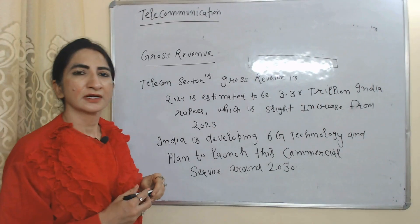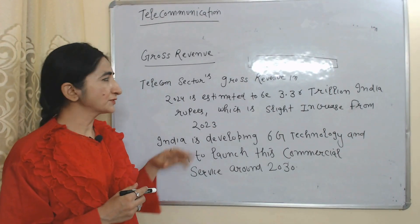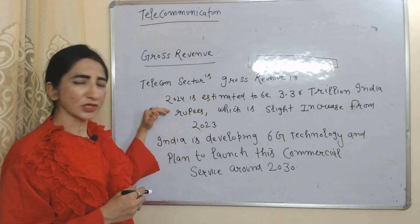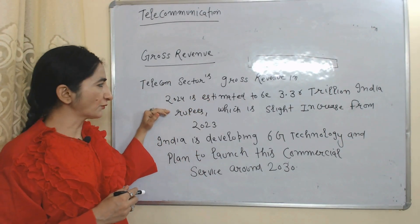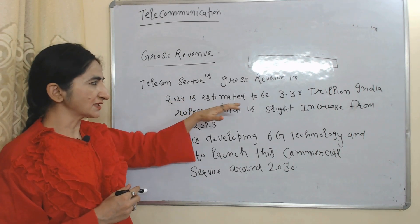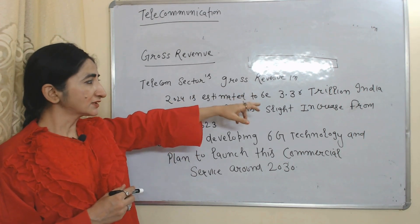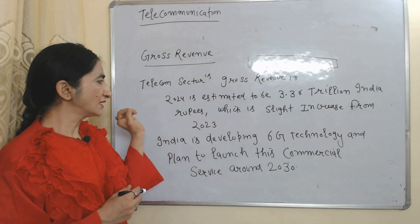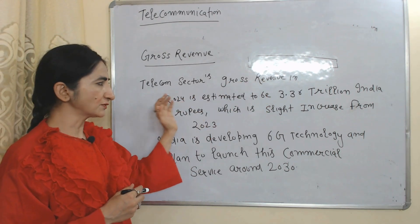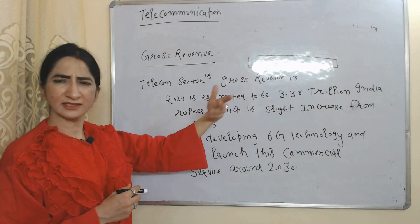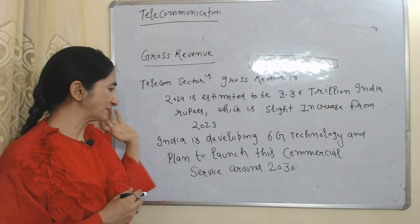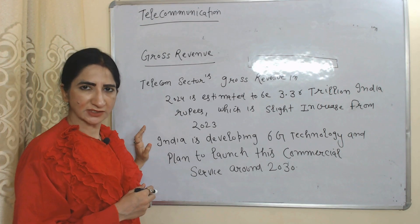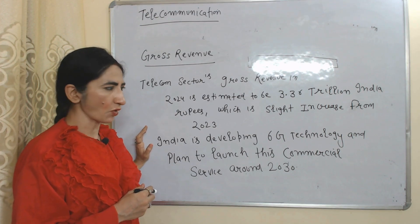The telecom sector's gross revenue in 2024 is estimated to be 3.36 trillion Indian rupees, which is a slight increase from 2023. India is also developing 6G technology.